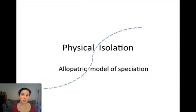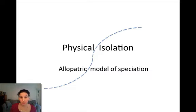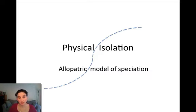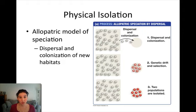Physical isolation is when a population of organisms becomes physically separated from one another, and this is called the allopatric model of speciation. A population becomes physically separated, those two populations become genetically isolated, and then those two populations diverge and result in speciation. There are two ways in which physical separation can happen in a population of organisms.